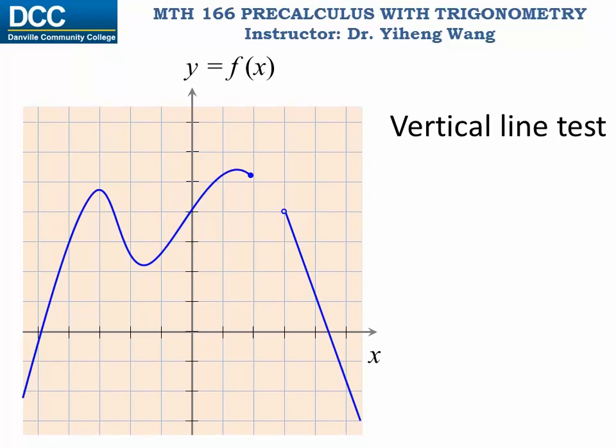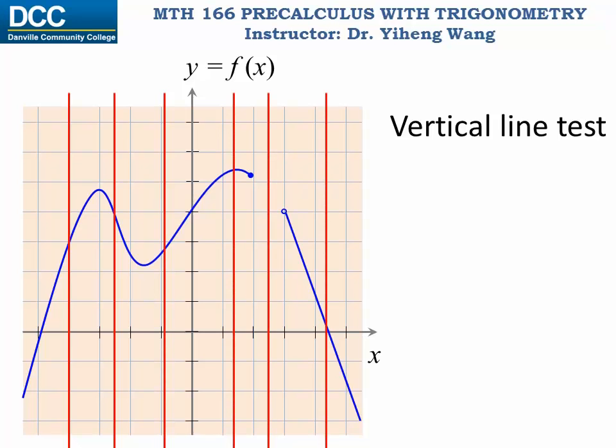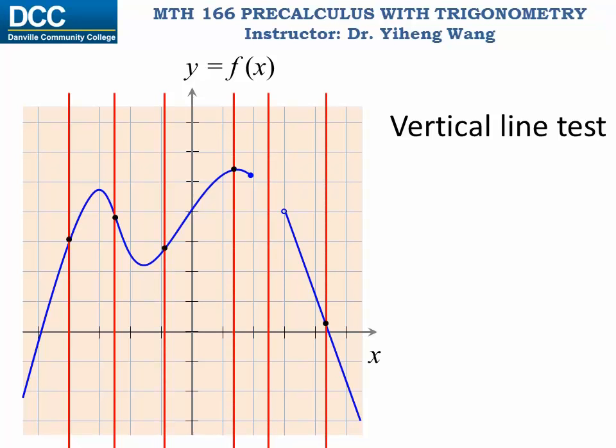Therefore we can use a vertical line test to test if the graph represents a function or not, which means that we should be able to sketch a vertical line anywhere on this graph, and this line should intercept with the graph at most once. Keep in mind that it could be that this line doesn't intercept with the graph at all because the function might not be defined for all real numbers, which means that the domain of the function might not be all real numbers.